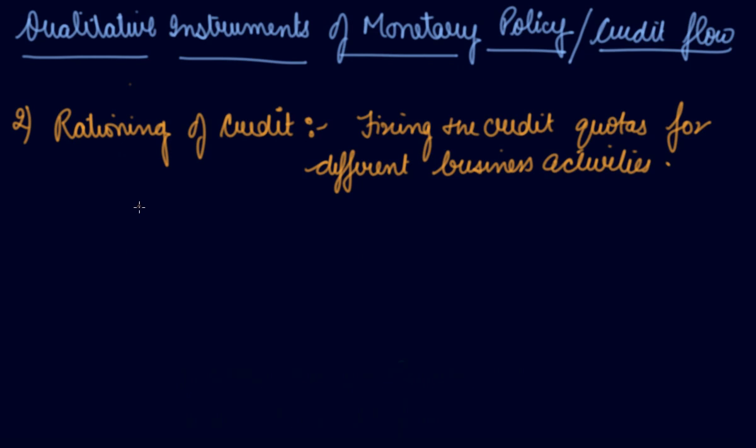So they will fix the credit quota on that part. Rationing of credit refers to the fixation of credit quota for different business activities. Rationing of credit is introduced when the flow of credit is to be checked, particularly for speculative activities in the economy.